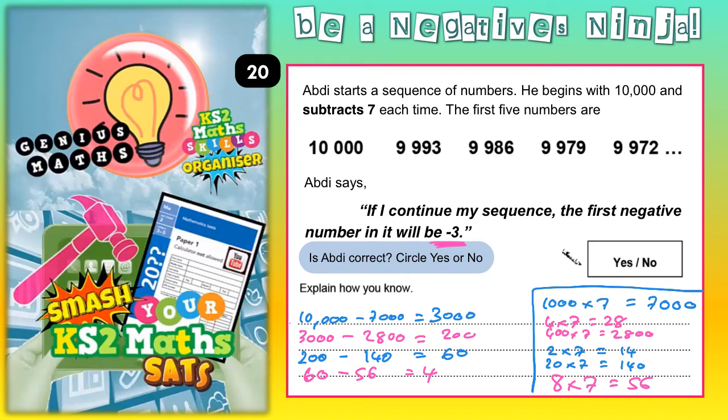Now here comes the crucial part of the question. It's saying if I continue my sequence the first negative number will be minus 3. We could take away all of these multiples of 7 and in fact we would get down to 4 eventually. And if you take another 7 from 4, 4 take away 7 does indeed get you to minus 3.